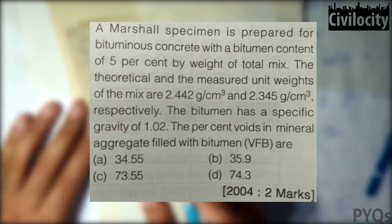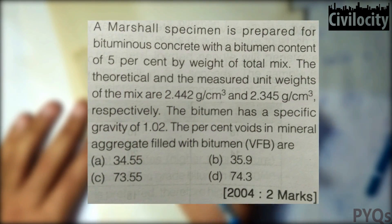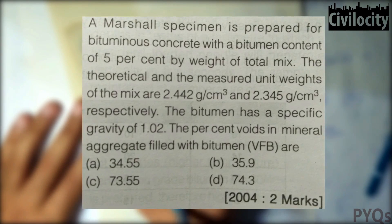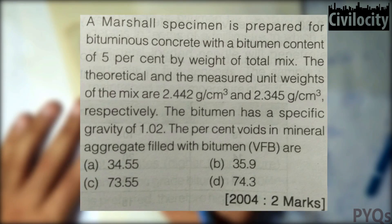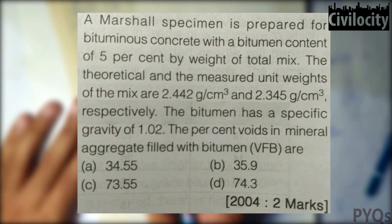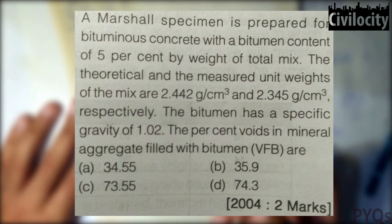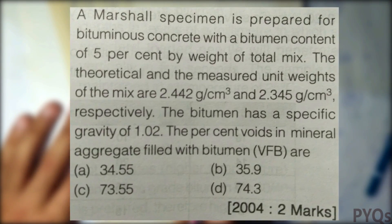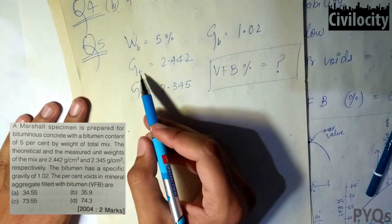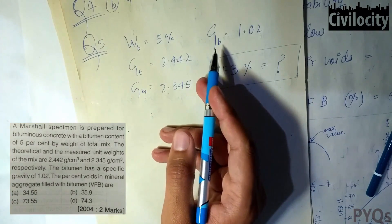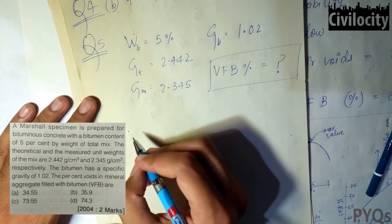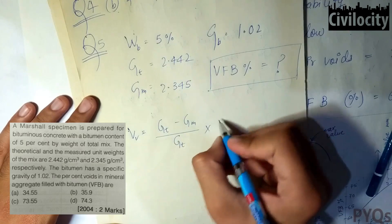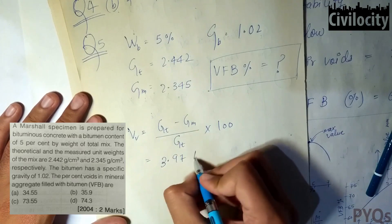Fifth question: a Marshall specimen is prepared with a bitumen content of 5% by weight of total mix, so Wb = 5%. The theoretical and measured specific gravities are Gt = 2.442 and Gm = 2.345, and the bitumen specific gravity is 1.02. First, find the percent air voids: VV = (Gt minus Gm) divided by Gt into 100, which gives 3.97%.